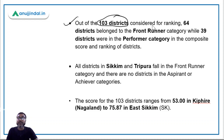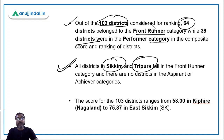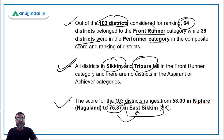A total of 103 districts were considered for this index. Out of these 103 districts, 64 districts belong to the Front Runner category while 39 districts were in the Performer category. Notably, all districts in Sikkim and Tripura fall in the Front Runner category, and there are no districts in the Aspirant or Achiever category. The maximum score is 75.87, belonging to the East Sikkim district of Sikkim.